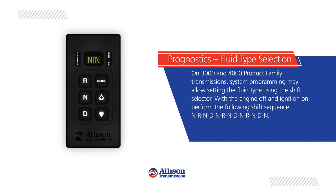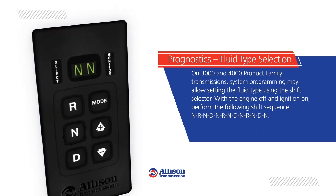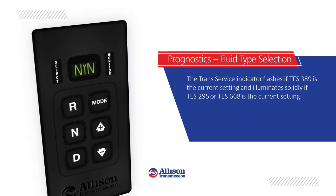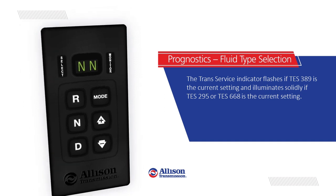Fluid Type Selection: On 3,000 and 4,000 product family transmissions, system programming may allow setting the fluid type using the shift selector. With the engine off and ignition on, perform the following shift sequence: neutral, reverse, neutral, drive, neutral, reverse, neutral, drive, neutral, reverse, neutral, drive, neutral. The TransService Indicator flashes for TES 389 as the current setting, and illuminates solidly if TES 295 or TES 668 is the current setting.